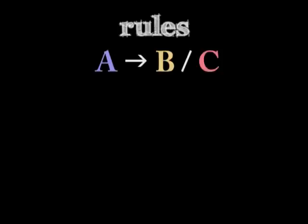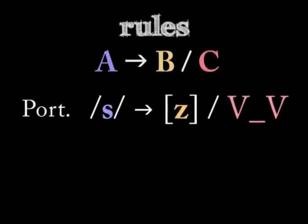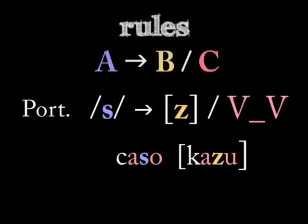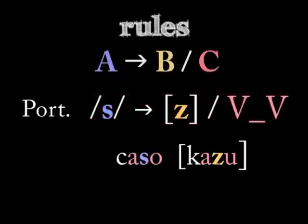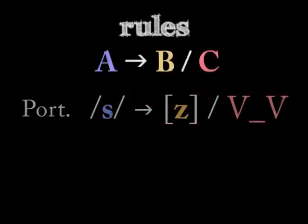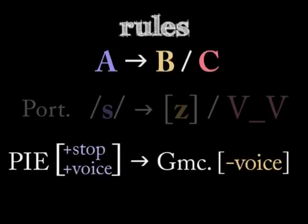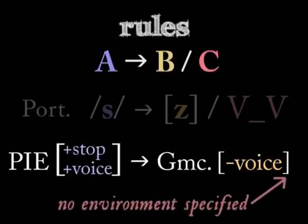For example, in Portuguese, the letter S is pronounced Z between two vowels. Here's the rule notation that tells us intervocalic S is pronounced Z in that environment. And here is the rule that voiced stops in Proto-Indo-European turned into voiceless stops in Germanic, regardless of environment.